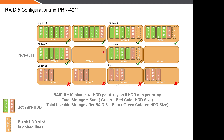In option three, if you have only three hard disks per array, this is not supported because the minimum per array required is five. In option four, each array is filled with five hard disks, which is supported. Another option is just one array with five hard disks — also supported. Option six is again not supported: if you have just three hard disks per array you cannot activate RAID 5; you need to consolidate all three drives into one array to enable RAID 5.